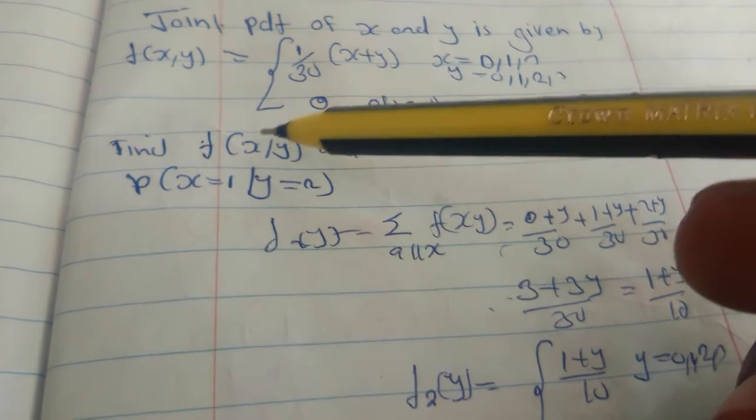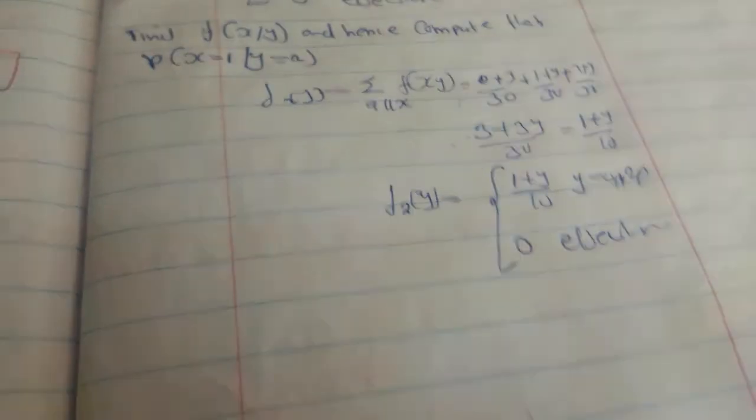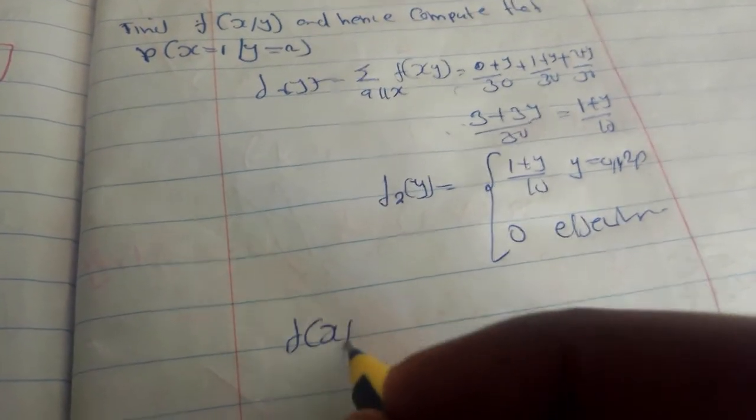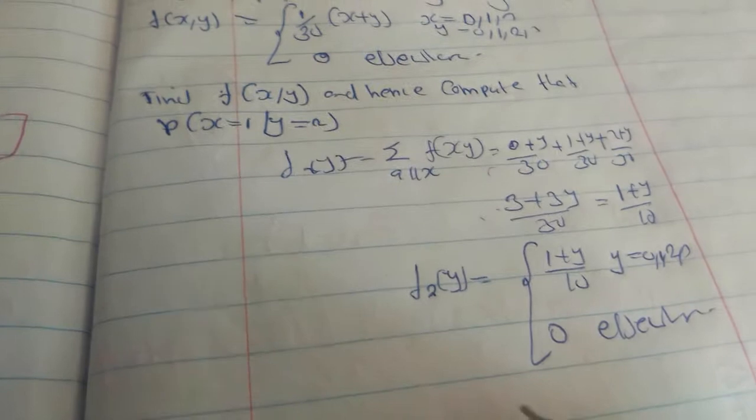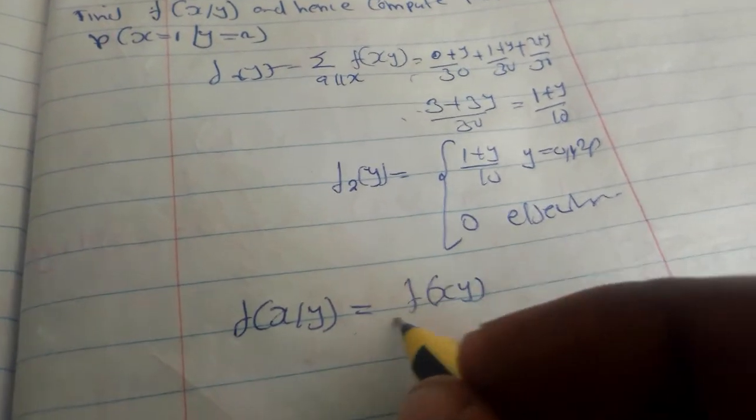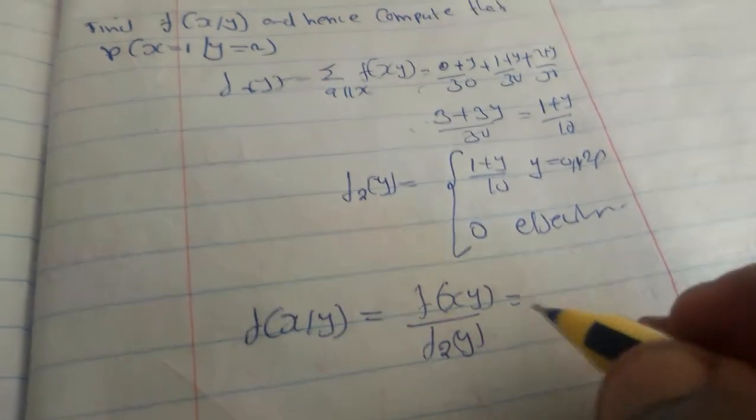So we are going to find the function of x given y. That means the function of x given y is equal to function of x,y over function of f2(y).